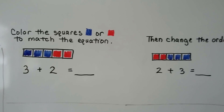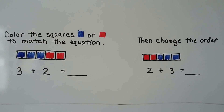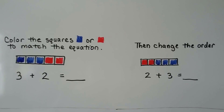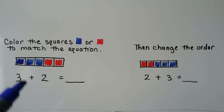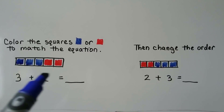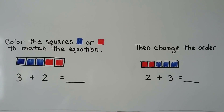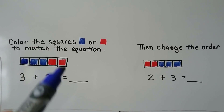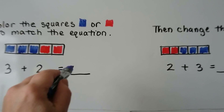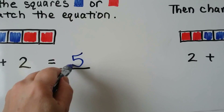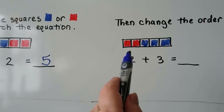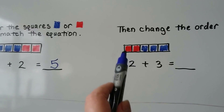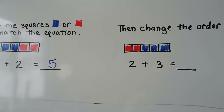We can color the squares blue or red to match the equation, then change the order. 3 plus 2 — we can have three blue ones plus two red ones. 3 plus 2 is 5 squares. If we change the order and have two red ones plus three blue ones, we still have 5 squares colored in.